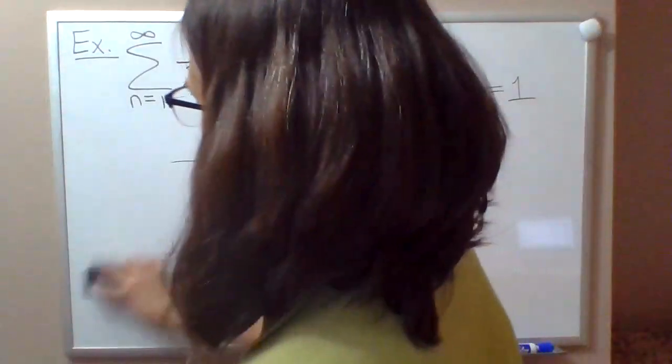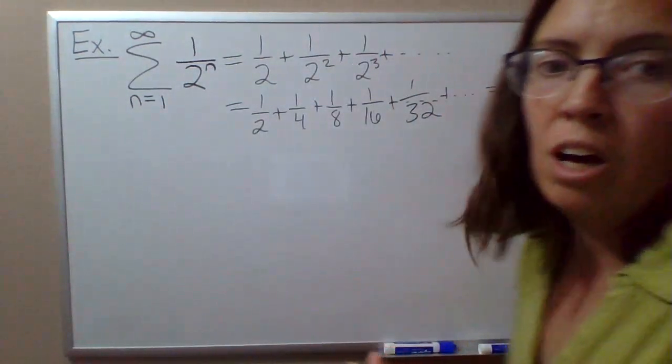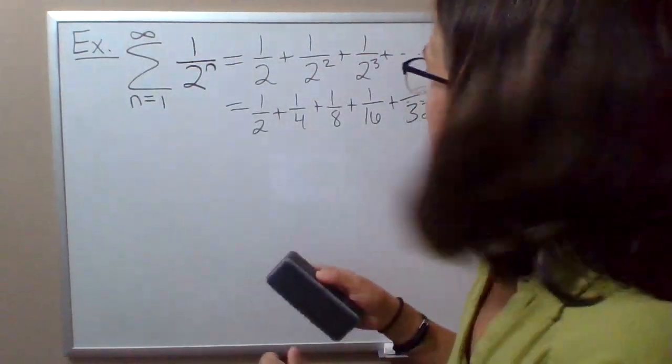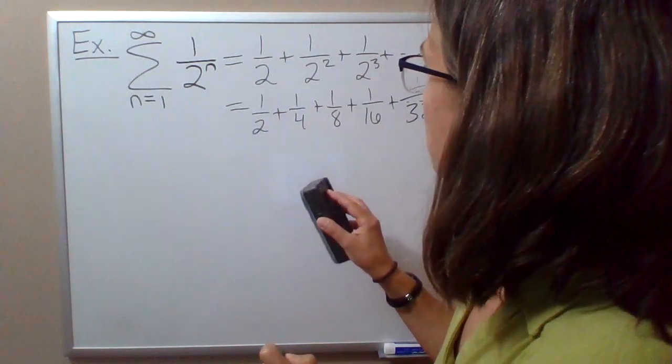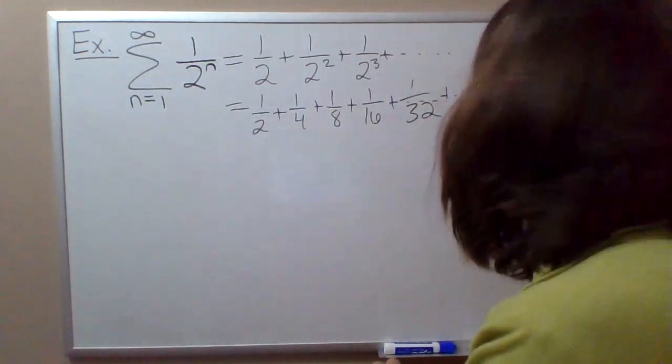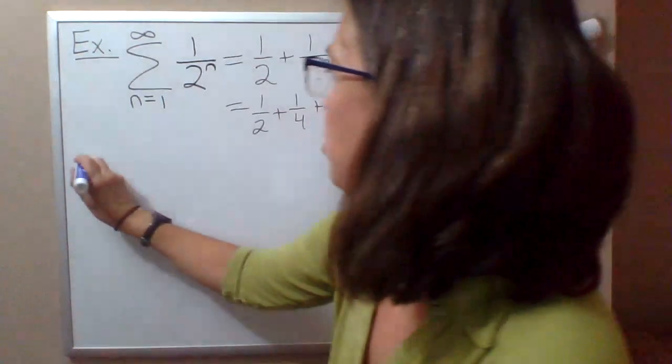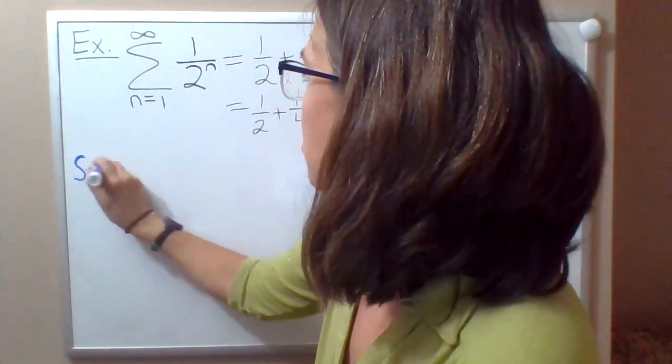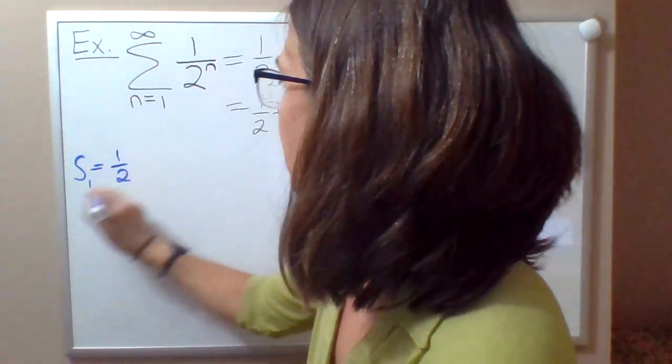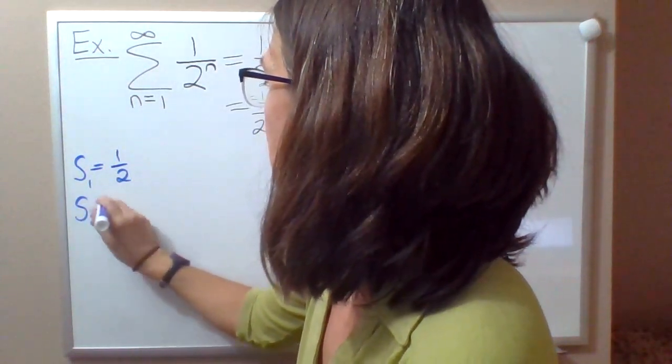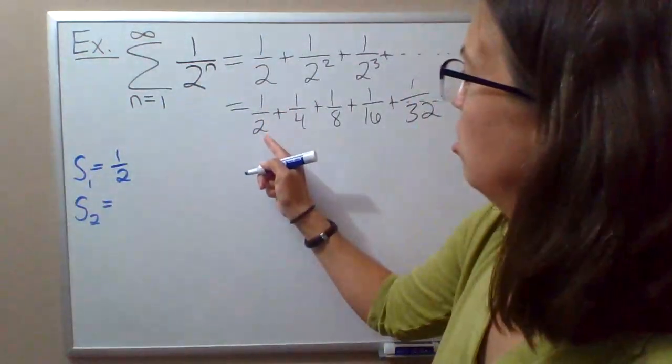Maybe a more sound mathematical argument: if we use the definition based on the partial sums, let's look at that sequence of partial sums. s1 is the sum of just the first term, so 1 half. s2 would be the sum of the first two terms, so 1 half plus 1 fourth.